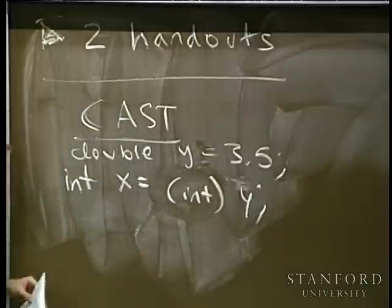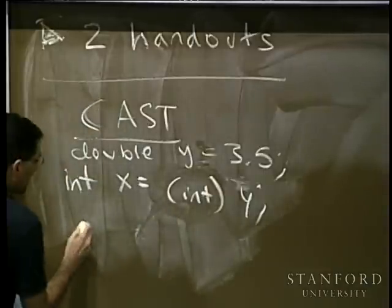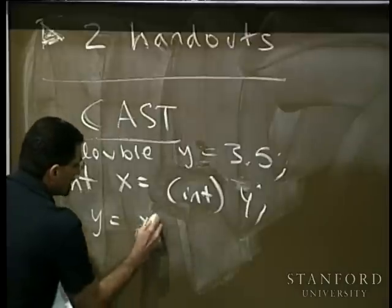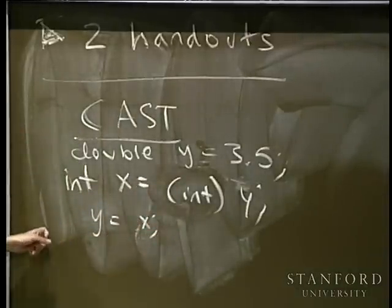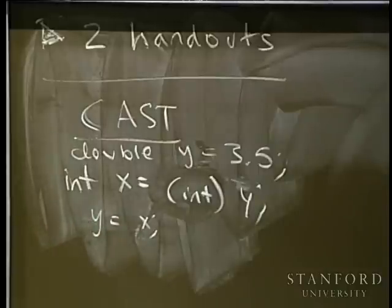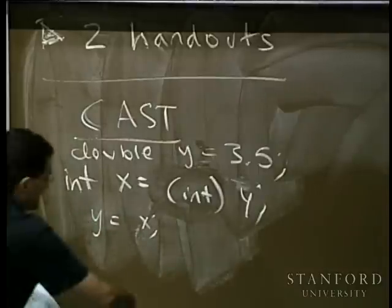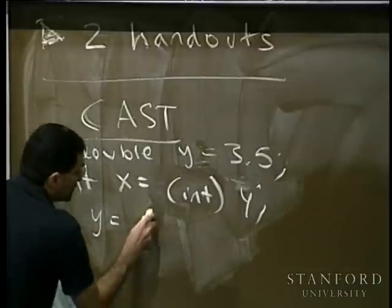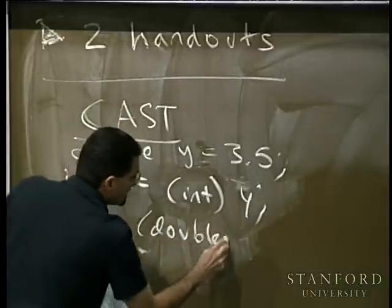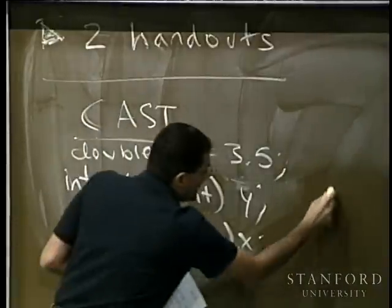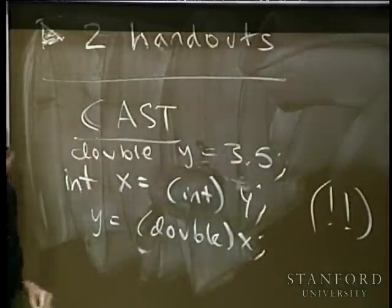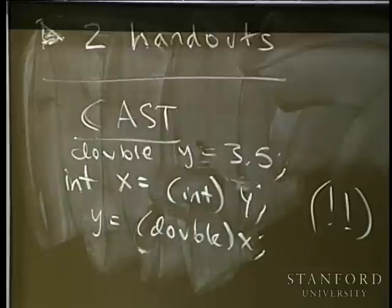It turns out that in Java, any time you do a cast to something that loses information — like going from a double to an integer because it truncates — you have to put in the explicit cast. If you go the other way, assigning an int to a double, you're not losing information, so it's optional but encouraged.